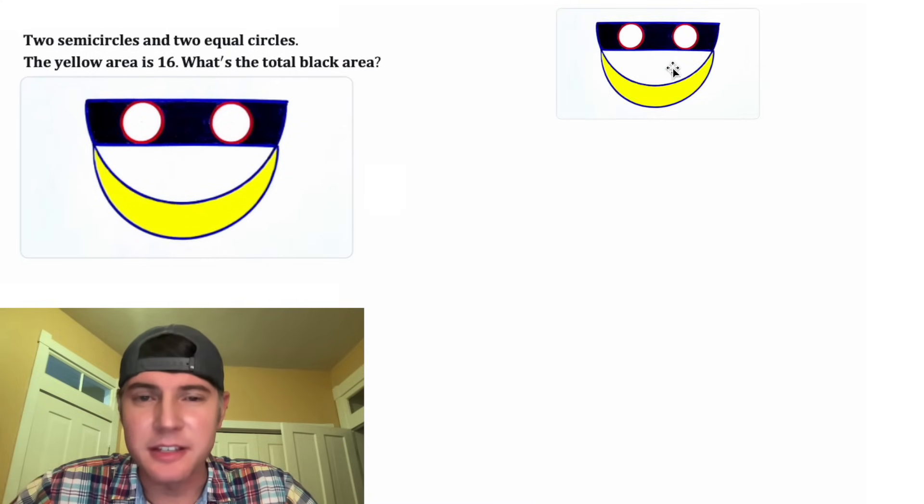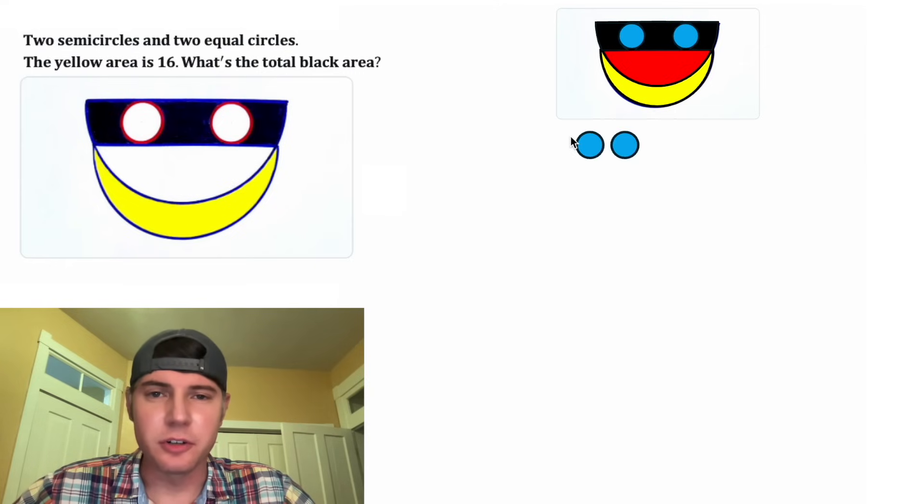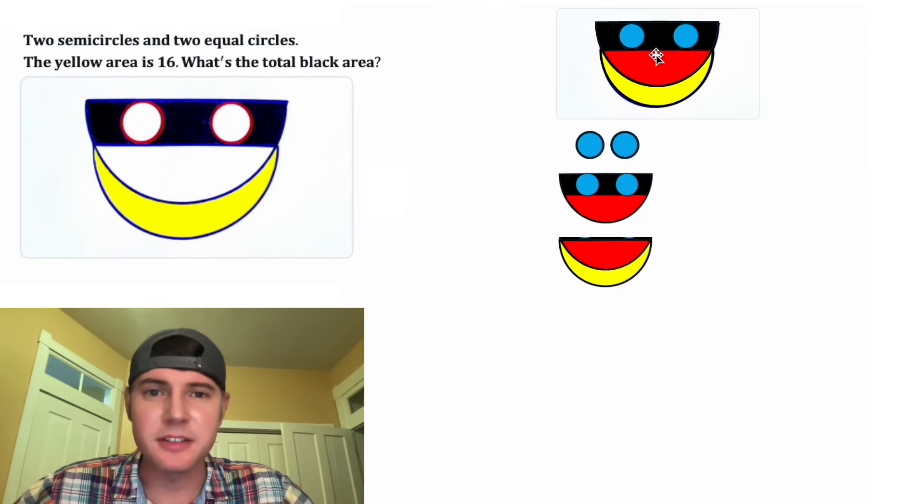I think it'll be easier if we color in these empty spots. Let's color in these equal circles blue and let's color in this region red. So we have the two equal circles. We have this semi-circle and then we have this semi-circle.